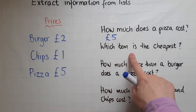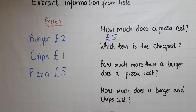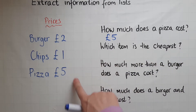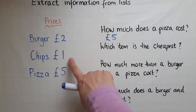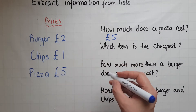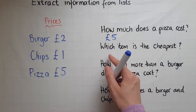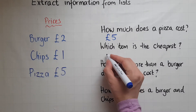Which item is the cheapest? If you look at them, the cheapest: burger is two, chips is one, and pizza is five, so one is the cheapest. So that item is chips.